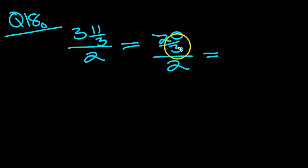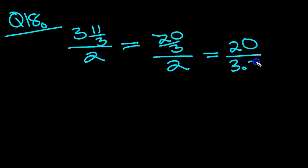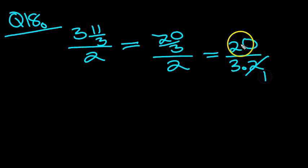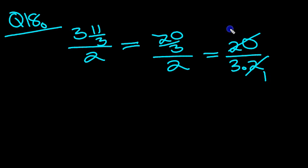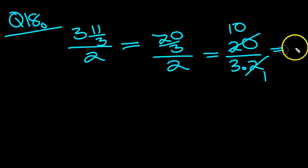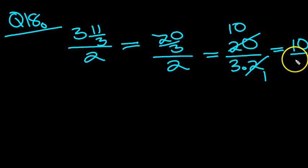All we have to do is drop the 3 down to be with 2, so it's 20 over 3 times 2. There's a 2 common top and bottom, so 2 goes into 2 once, and 2 goes into 20 10 times. So we end up with 10 thirds.